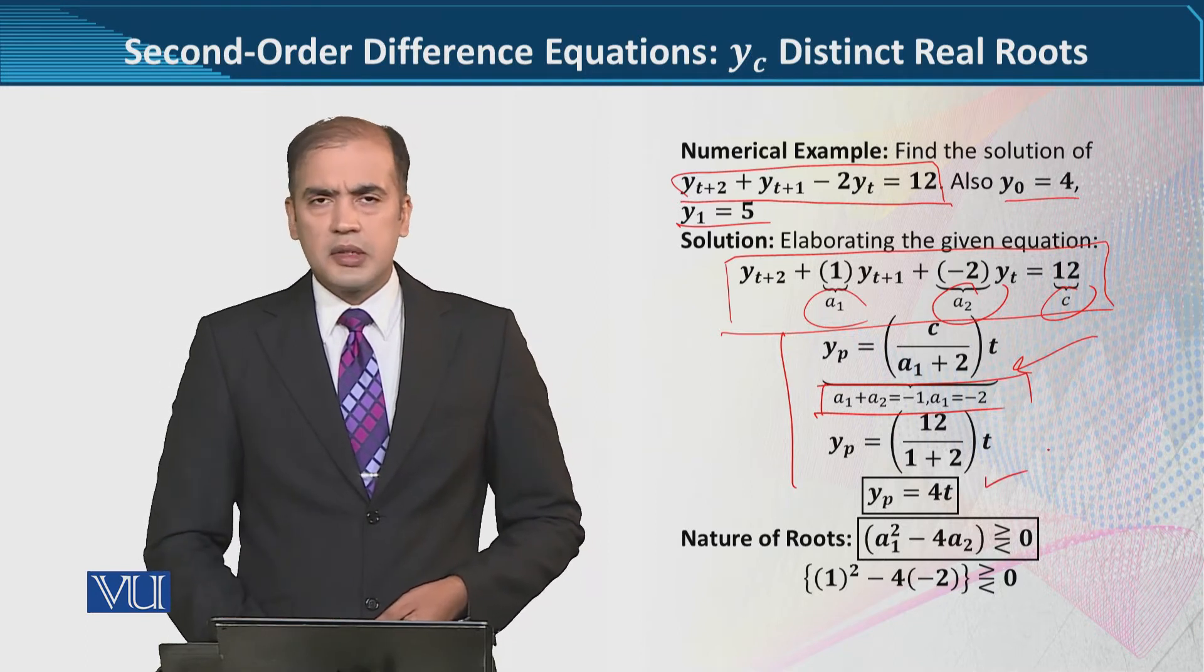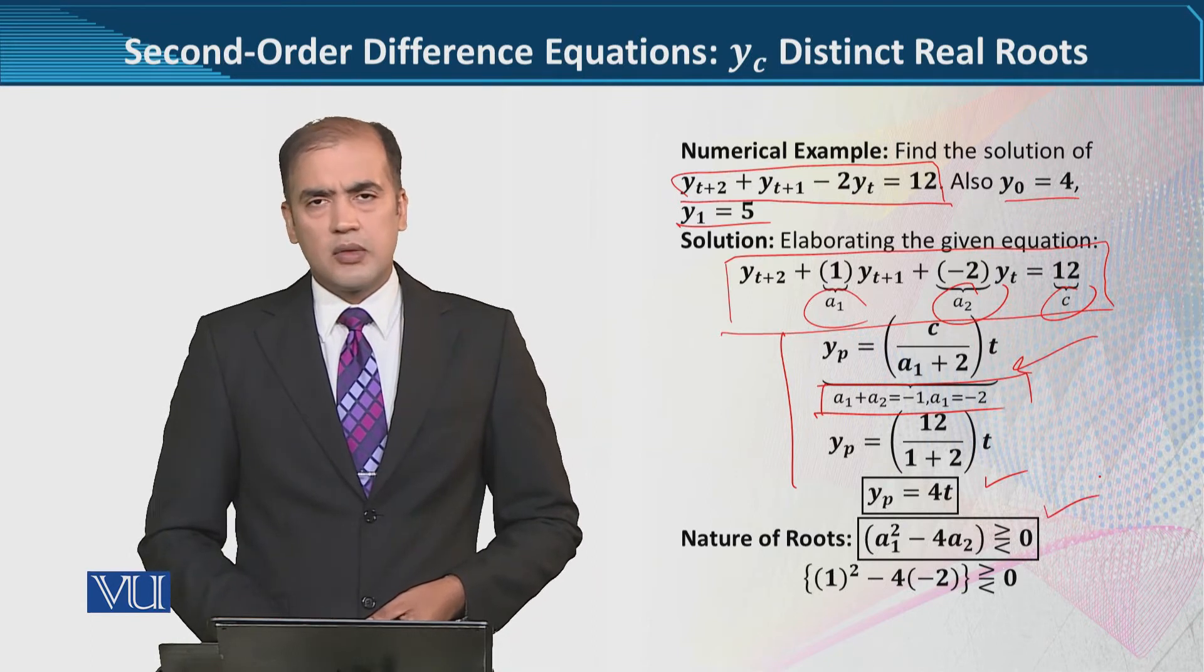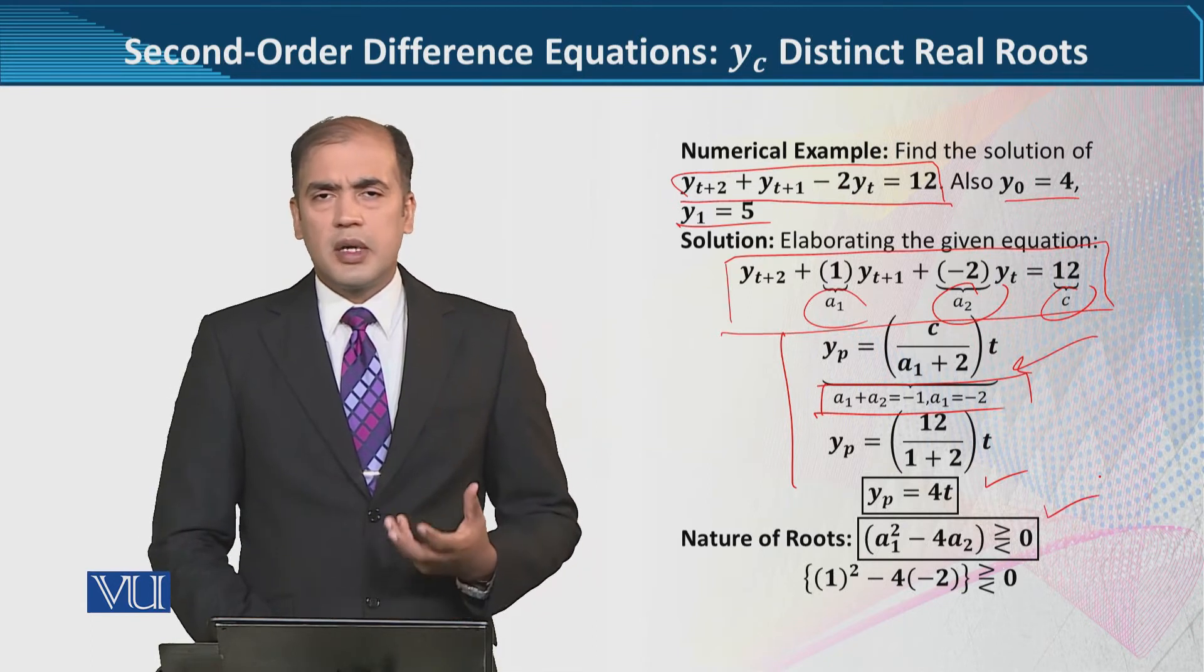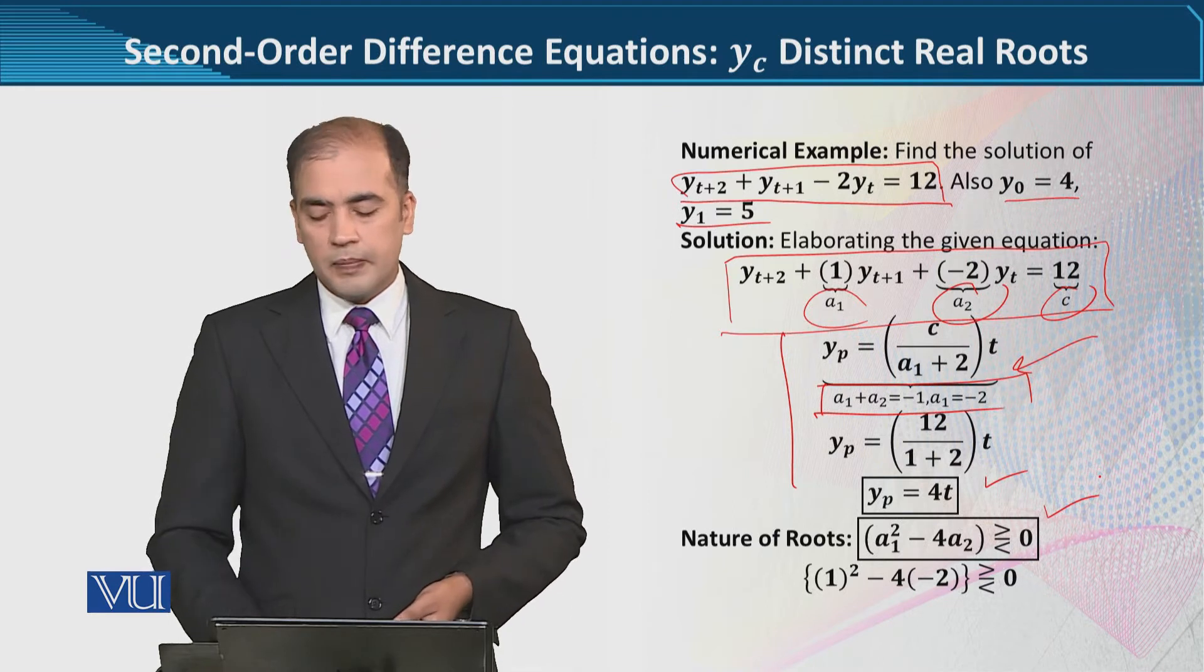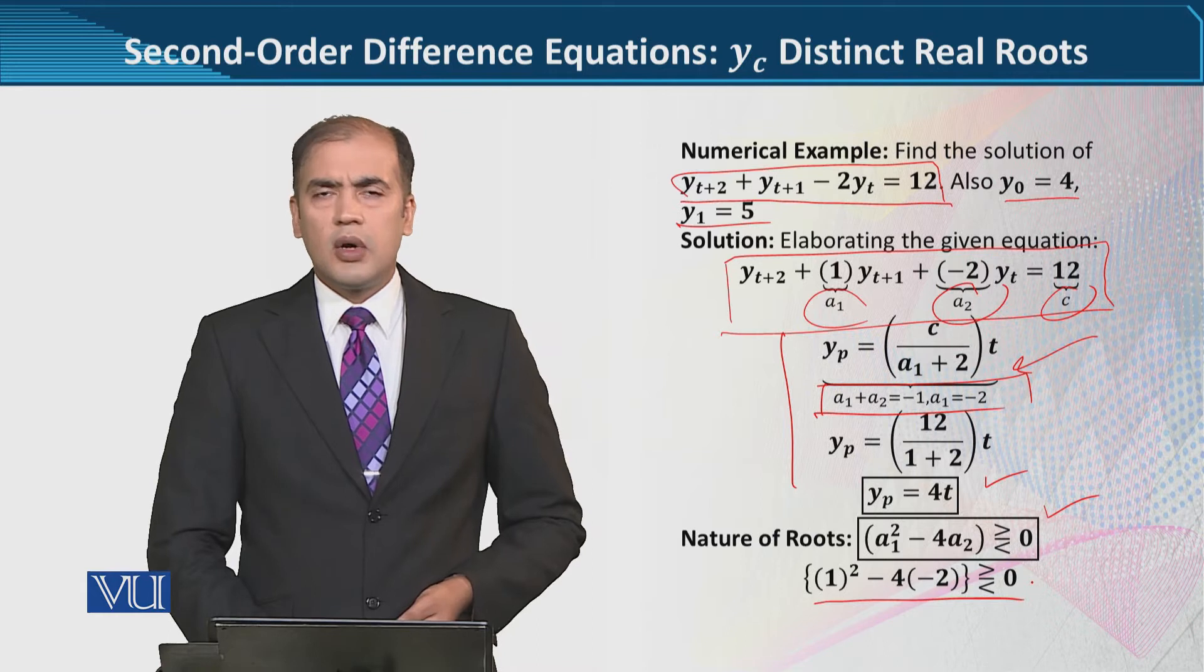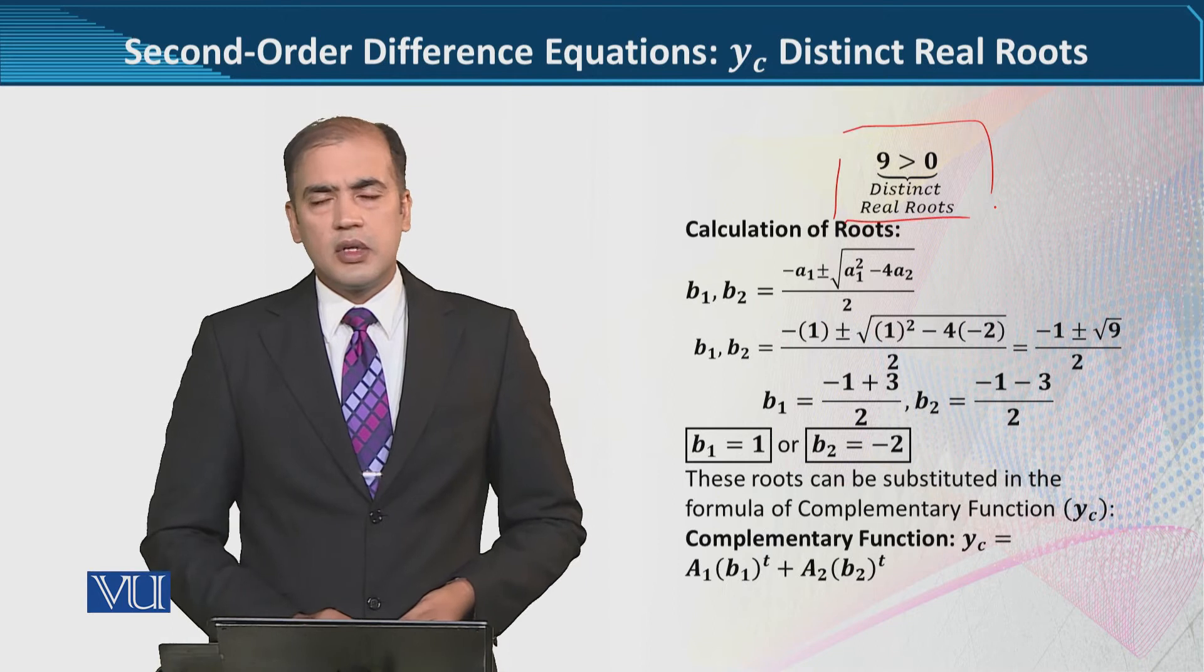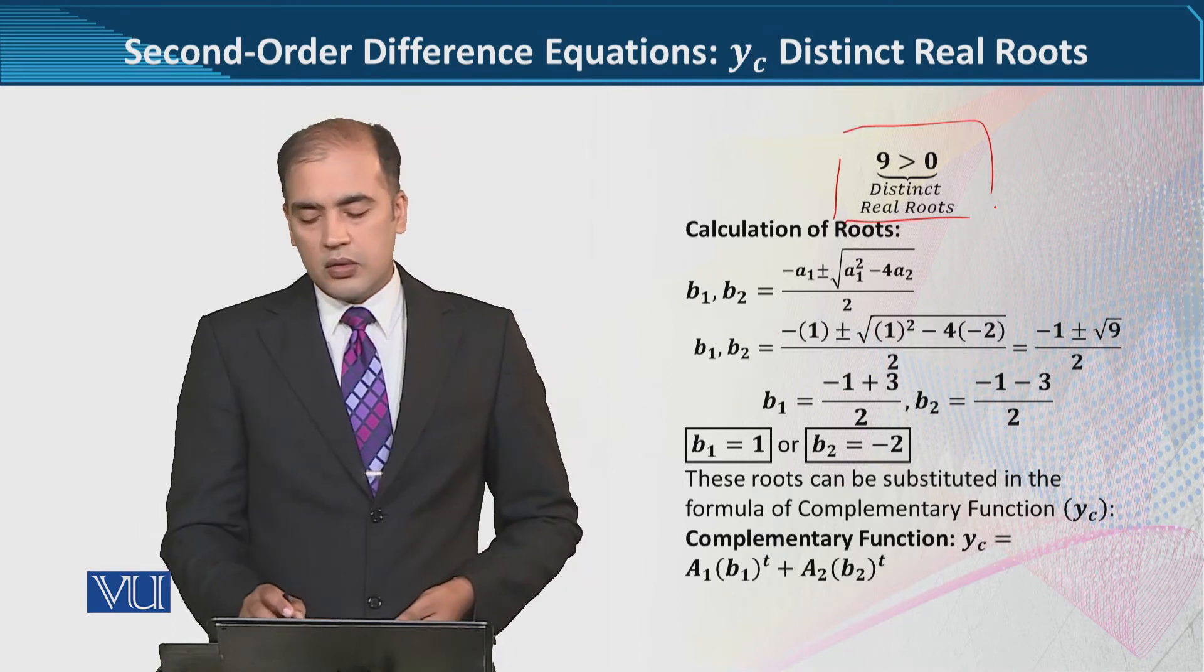Again, this test discriminant which we have done many times: here it is 9, which is greater than 0. It means that there is a distinct real root case.